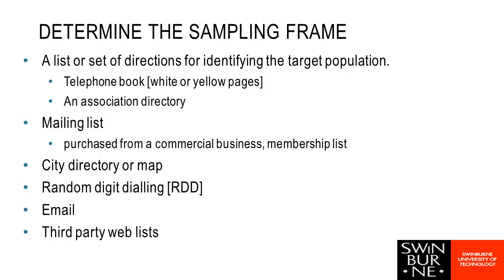A sampling frame is all of the people or sampling units we can possibly draw our sample from. It could be a telephone book, an association directory — if I want to survey doctors, I can go to the medical association. There are mailing lists you can purchase, groups that have members, Google Maps, city directories, or random digit dialing (though be careful about the no-call list). You might use email or third-party web lists. Providers like Valued Opinions have databases of people — if I used Valued Opinions, my sampling frame would be all of their members. Anyone who's not a member of that surveying group cannot be part of my sample because they can't get selected.